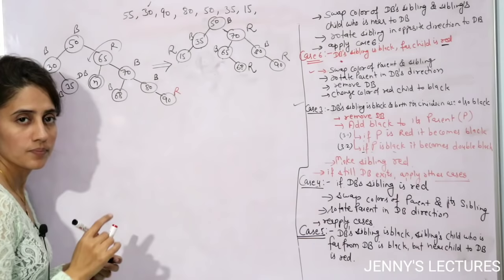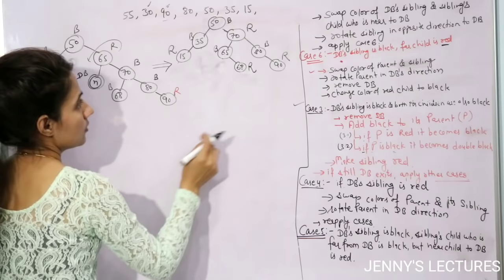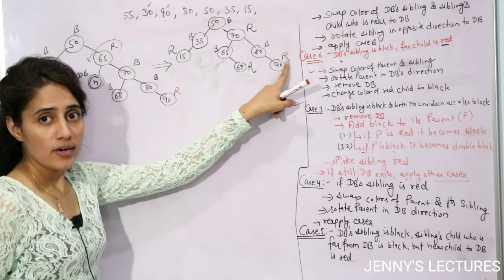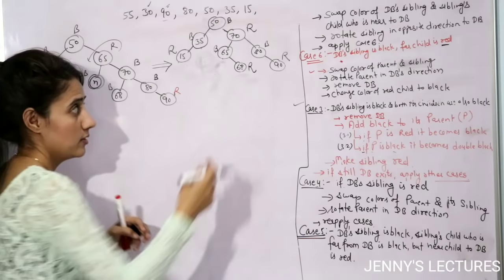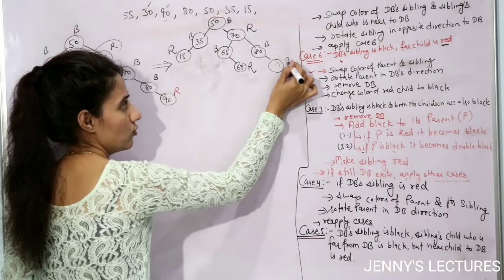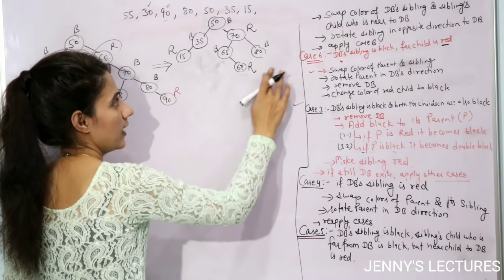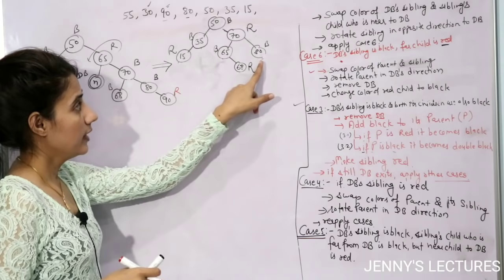Next, delete 90. Node 90 is red, so simply delete it — no adjustments needed. Replace with nil gives single black, so no double black situation arises.